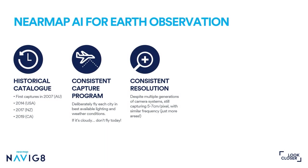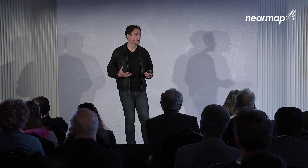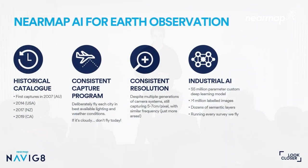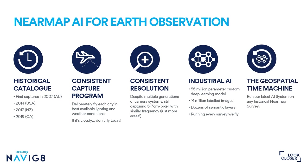With the resolution, even as new camera systems are released that can do more things, we still have that consistent base product of five to seven centimetre per pixel RGB imagery that creates this underlying longitudinal data set. Our AI is being done in what I believe is quite a unique way in the industry. Rather than being project-based, we're doing industrial-scale AI to meet the consistency of the capture program. We've got a big custom deep learning model, with huge labelling effort across many layers run on every survey we fly. We can run our latest Gen 5 system on any historical imagery survey because it just relies on five to seven centimetre RGB imagery.